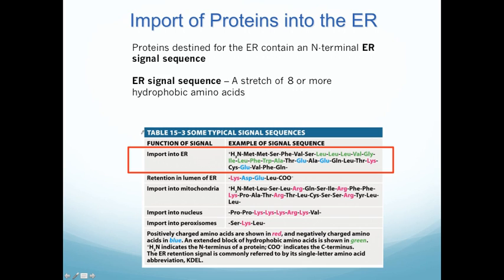Now we're going to do endoplasmic reticulum import. It uses a similar concept of signal sequences, but it's a little different in how the protein gets into the ER because there are no pores — things have to be transported across the membrane. The ER signal sequence is essentially a stretch of eight or more hydrophobic amino acids, typically on the very N-terminus of the protein — for example, six amino acids on the N-terminus followed by the ER signal sequence. That's all you need to signal a protein into the endoplasmic reticulum.